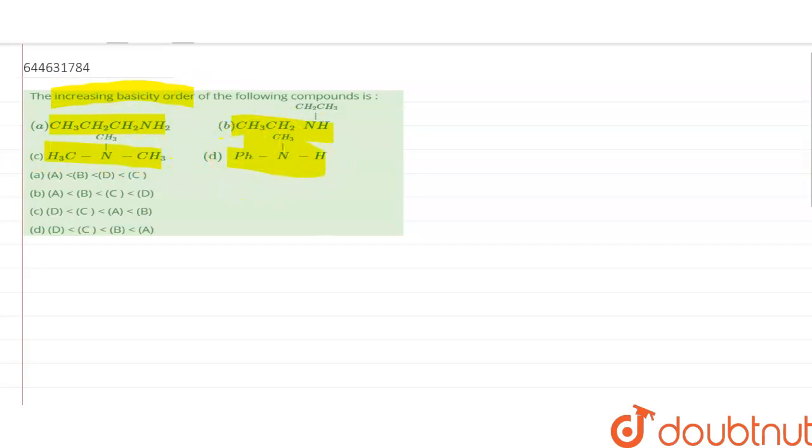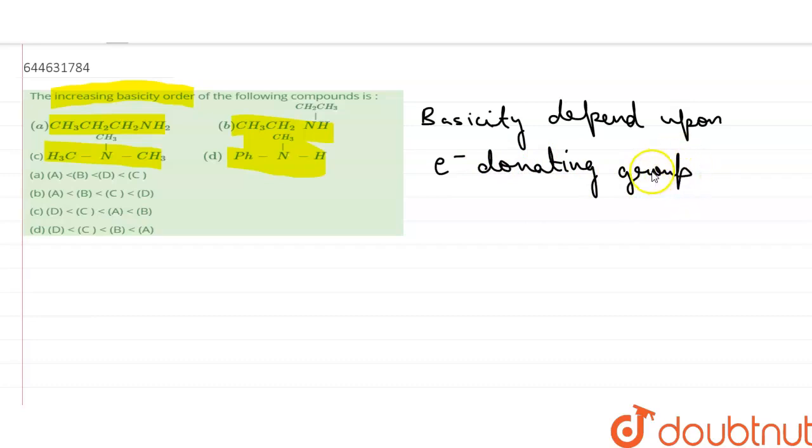Since we know that basicity is dependent upon the electron donating groups, more the electron donating groups, more will be the basicity. That is, basicity is directly proportional to plus I effect.